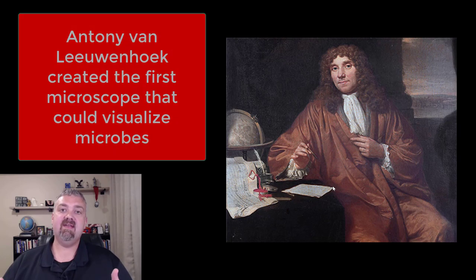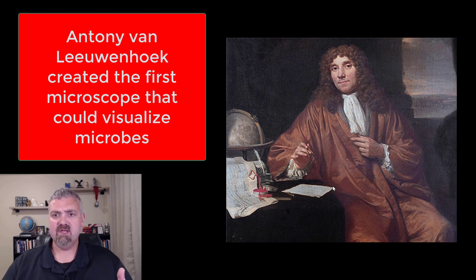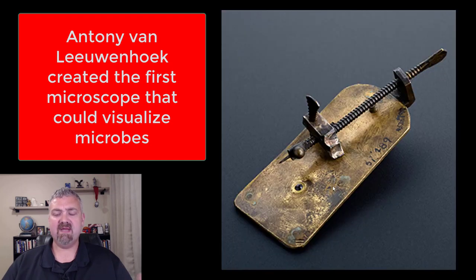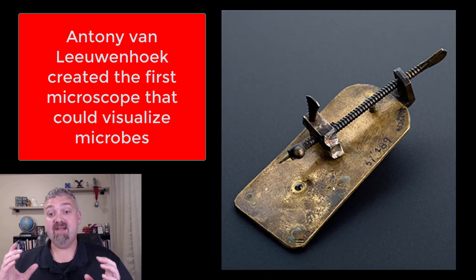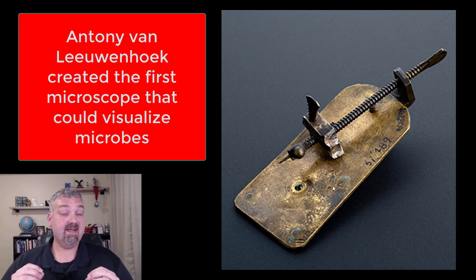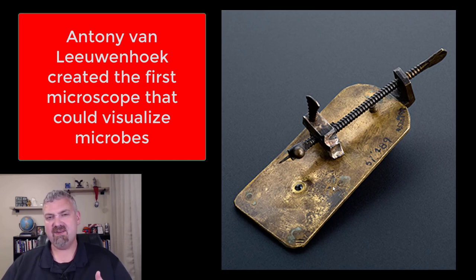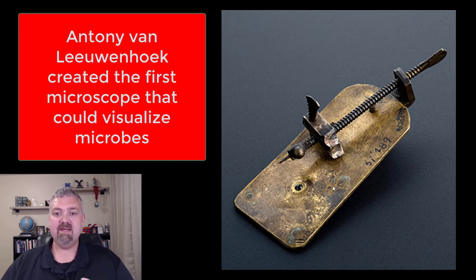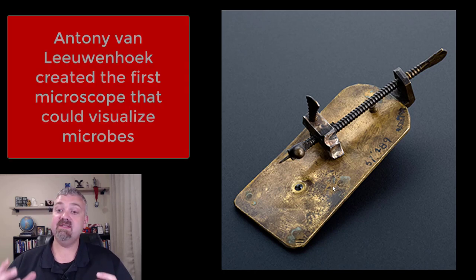This here is Antony Van Leeuwenhoek, and let me go ahead and show you his microscope — that's more important. This looks like nothing, but you have to understand this guy: he was not a scientist, he was not educated. I believe he was a janitor and ran a dry goods store — I think they called it a haberdashery. But he was a master at grinding lenses.